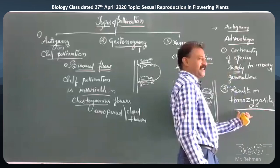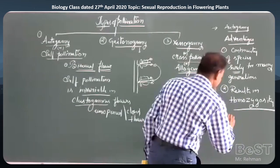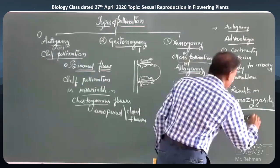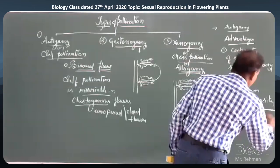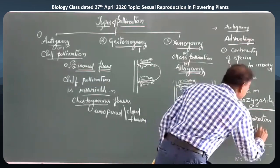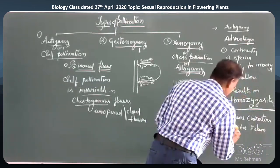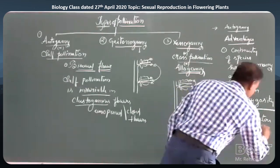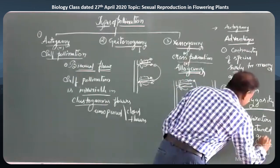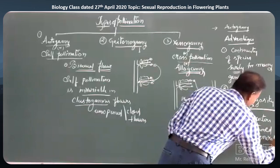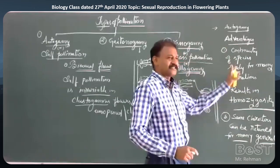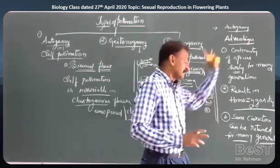In genetics, you will study pure homozygous dominant and similar states. Because of homozygosity through autogamy, the same characters — including desirable or good characters — can be retained for many generations.